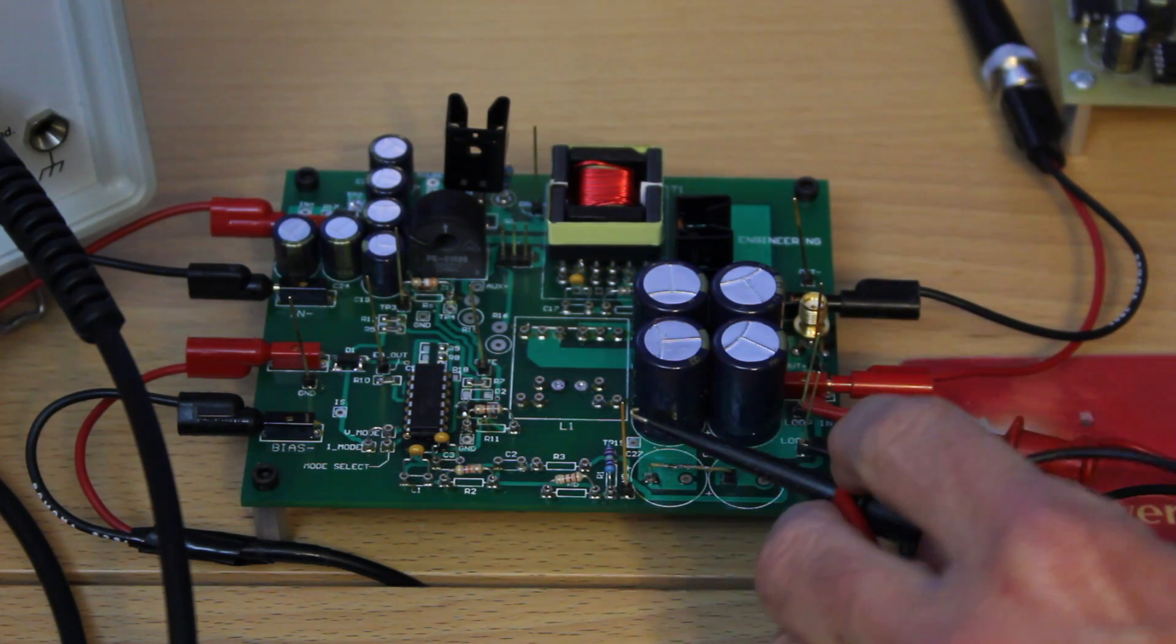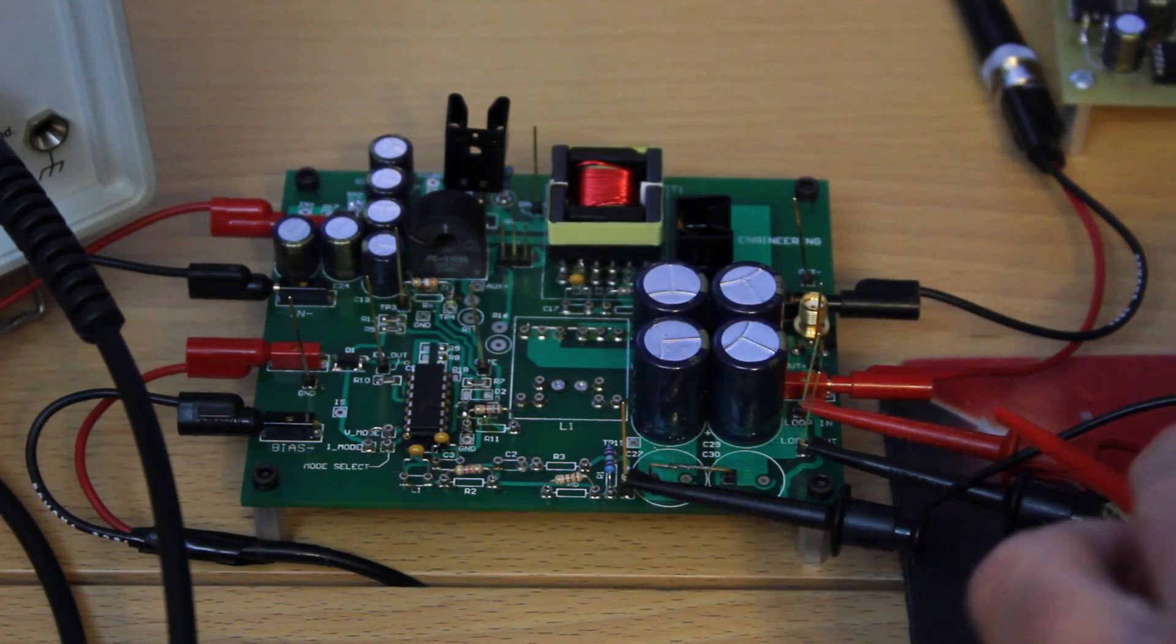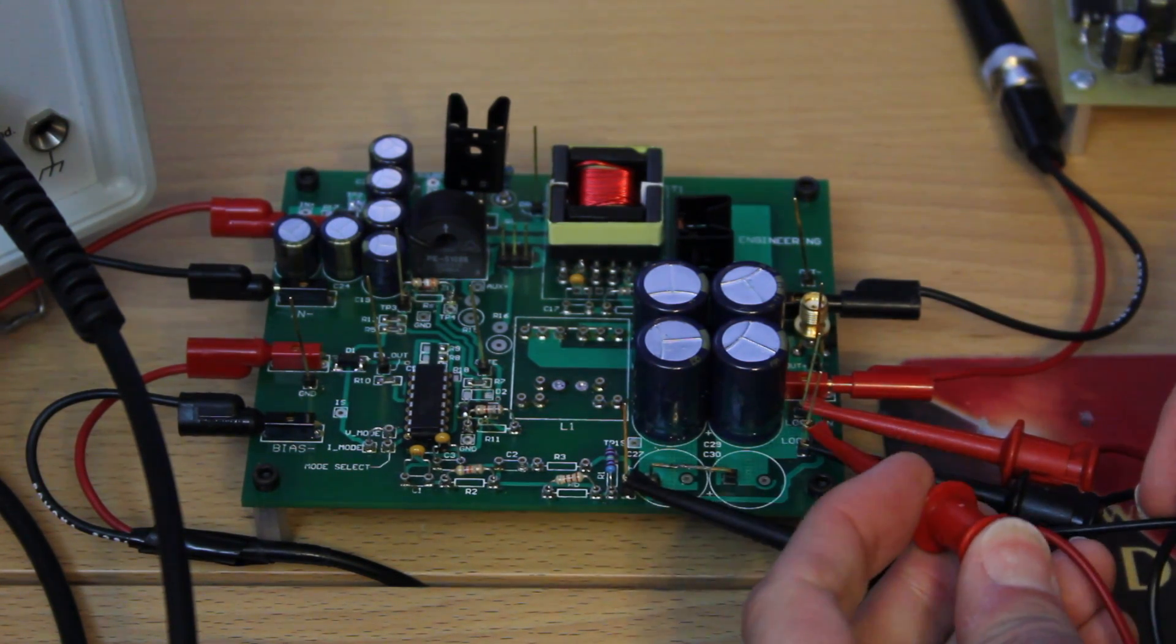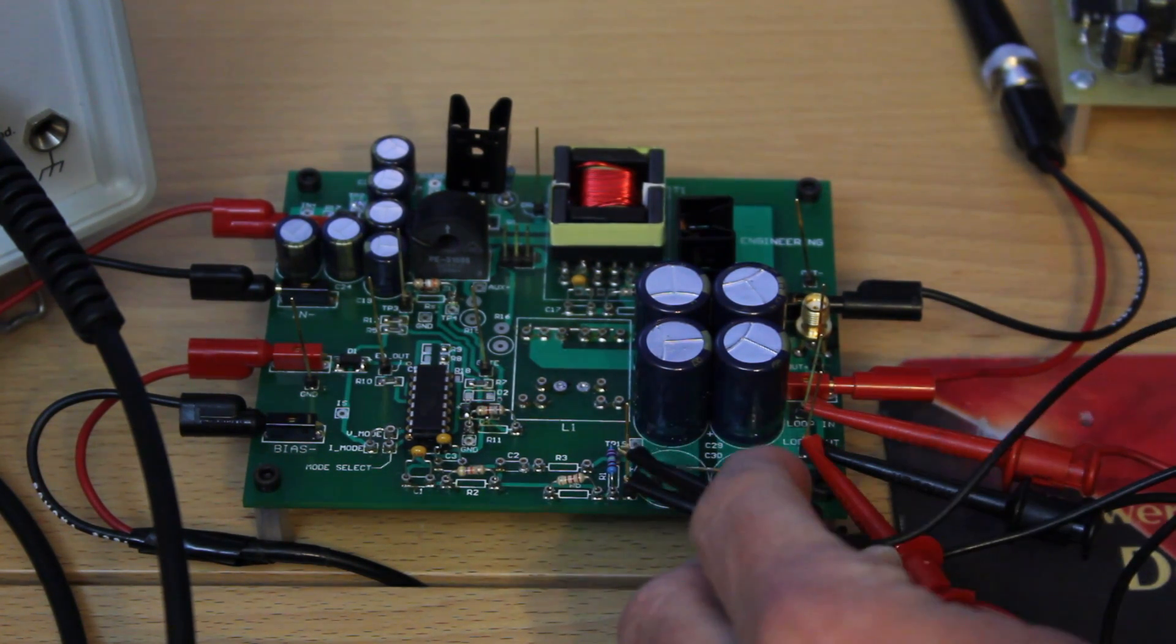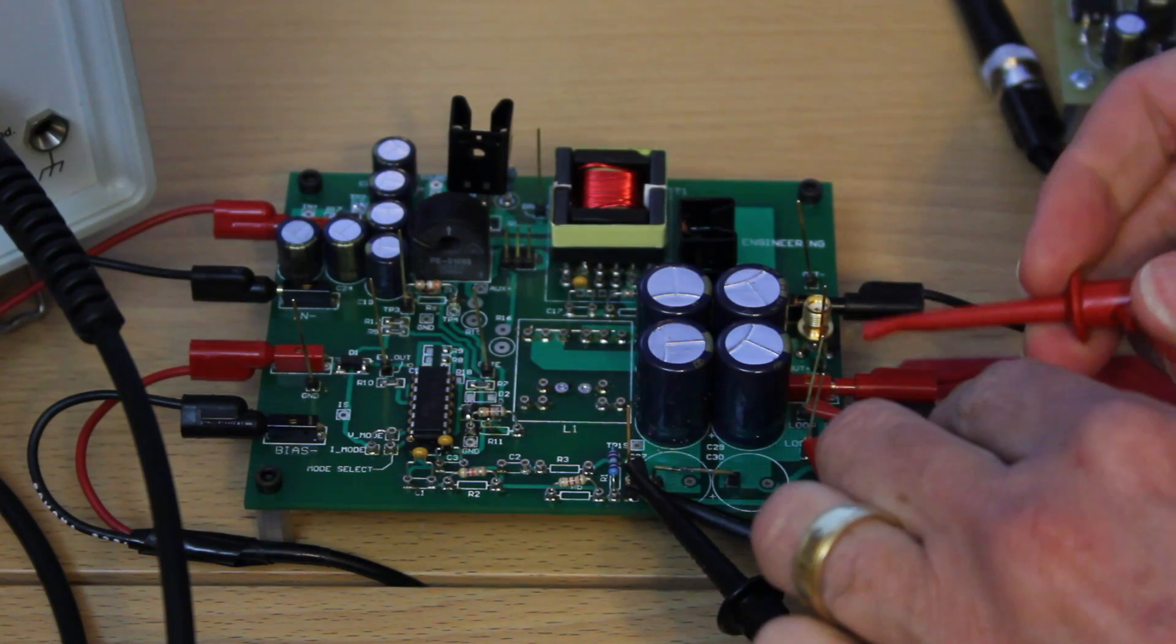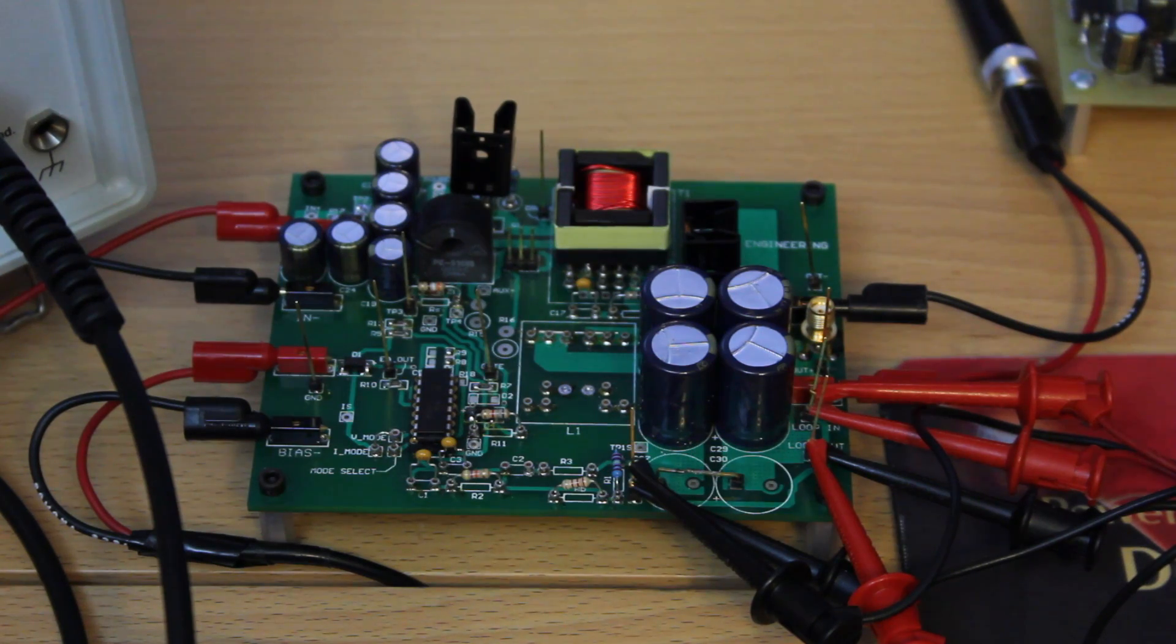So we're going to hook up the test signals, the test channels, on either side of the resistor. So this one here is going to the output of the loop gain, and then we're going to connect the other test cable to the input of the loop gain. And the ratio of those two signals will give us the gain of the system.